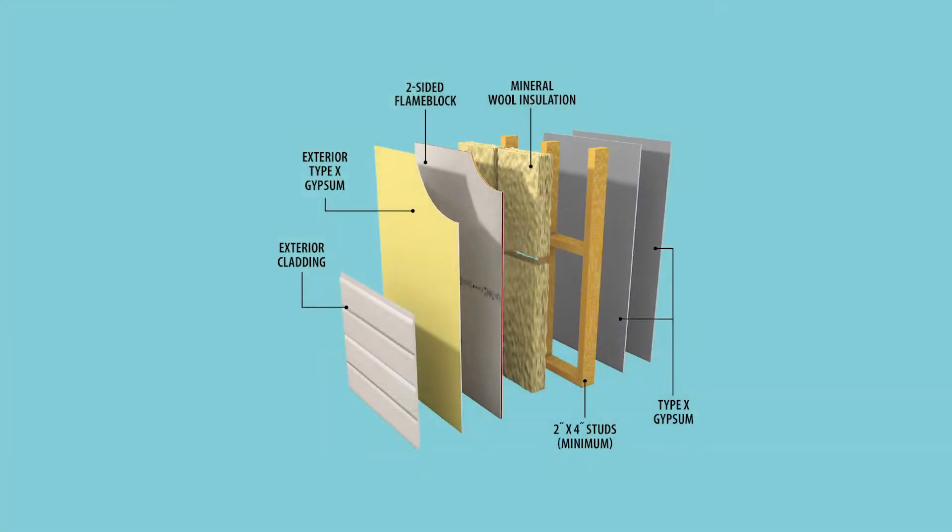For instance, a wall — sheetrock, studs, insulation, more sheetrock of specified sizes and R-value in materials — would have an STC rating. A single piece of sheetrock does not carry an STC rating. You must look at the overall assembly.